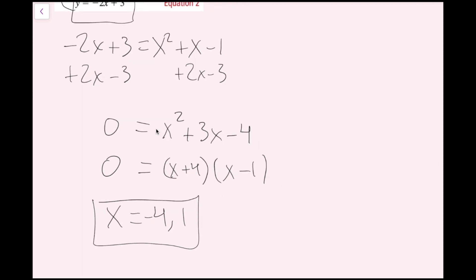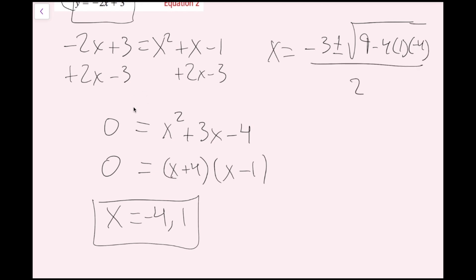In standard form set equal to 0, I use x equals negative 3 plus or minus the square root of 3 squared which is 9, minus 4 times 1 times negative 4, all over 2 since a equals 1. This gives the square root of 9 plus 16, which is the square root of 25, so negative 3 plus or minus 5 over 2.